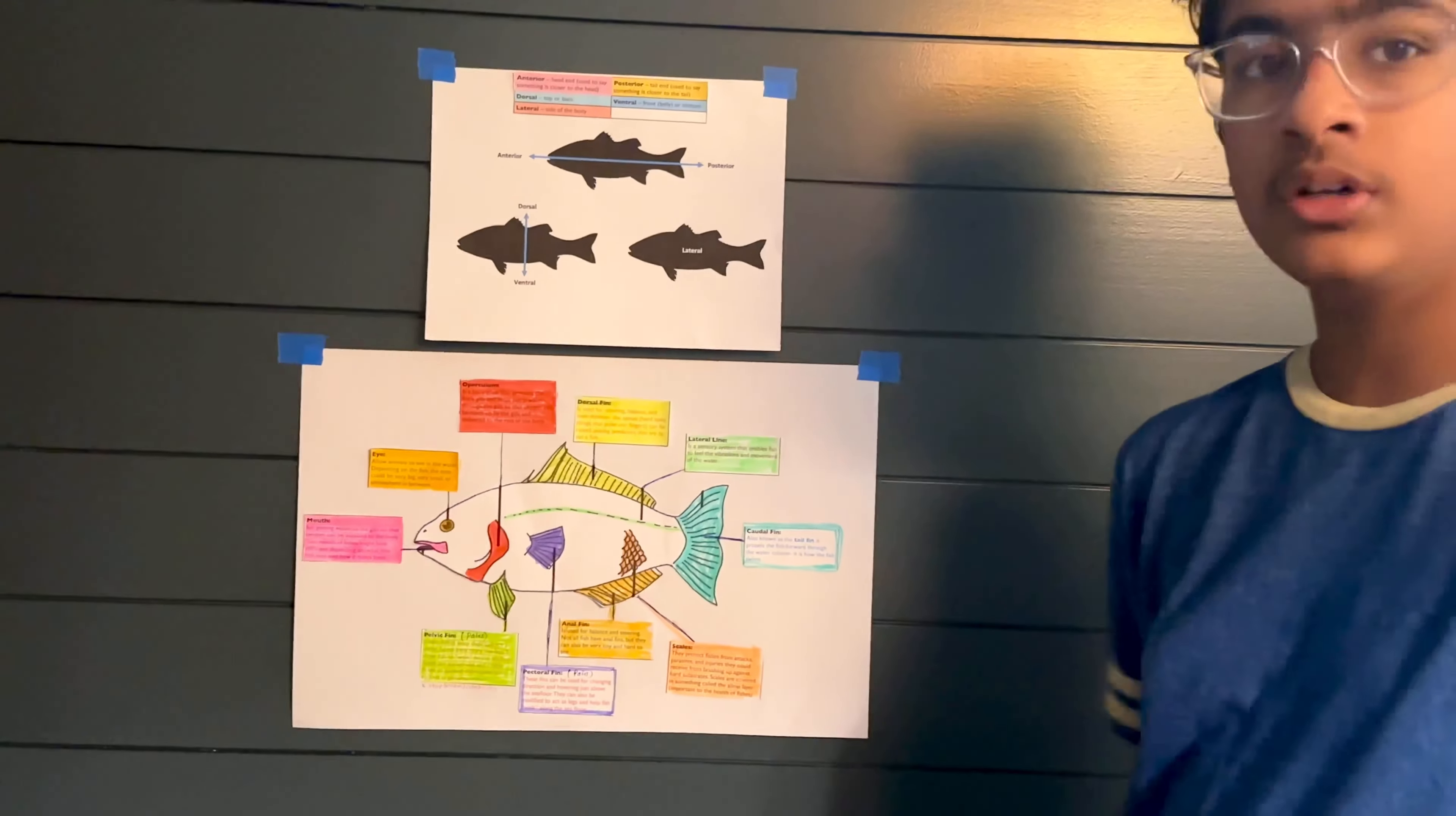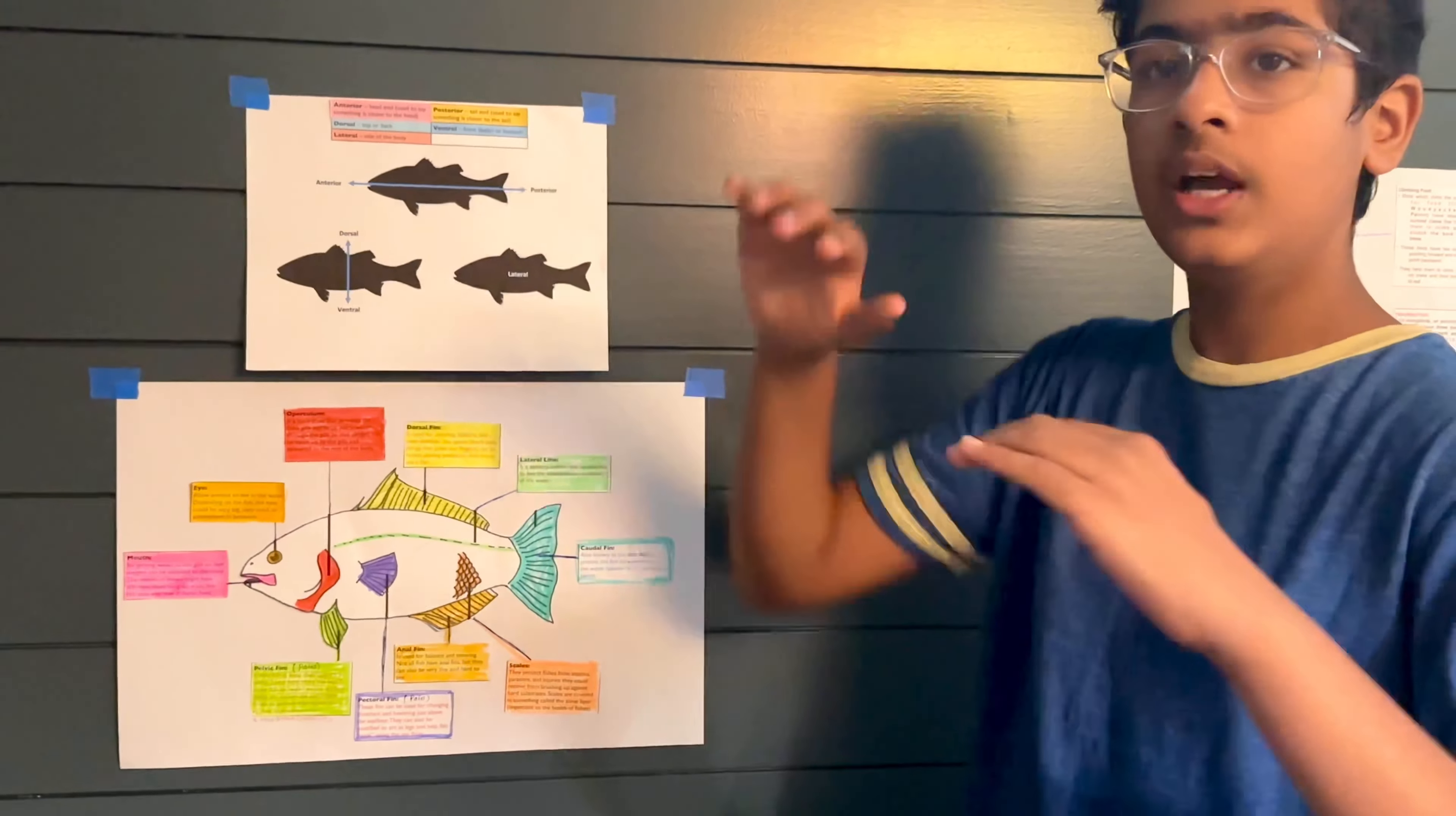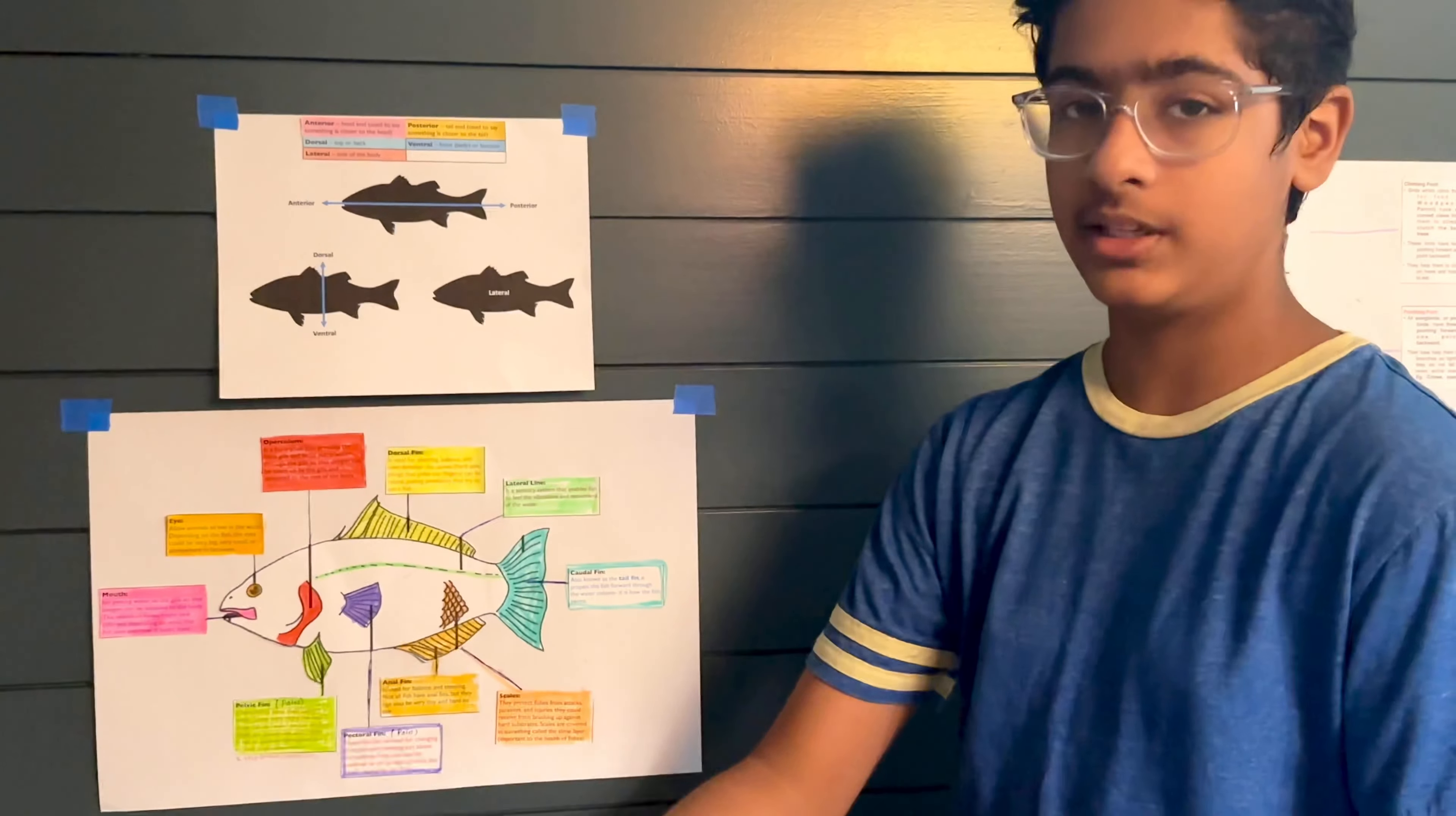Next is pectoral fins. Pectoral fins are basically the equivalent of your arm. The pectoral fins help the fish hover over the seafloor and they're typically used for mid-speed to just light jogging pace.